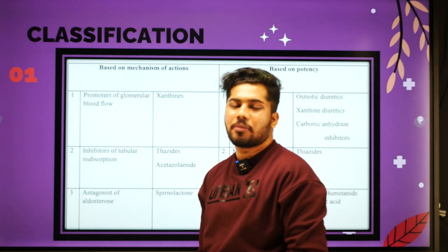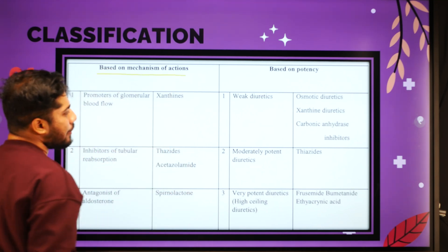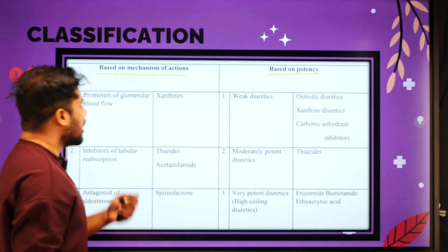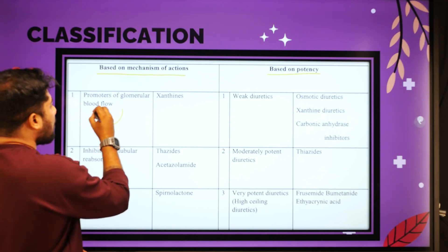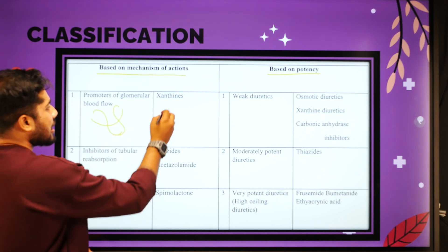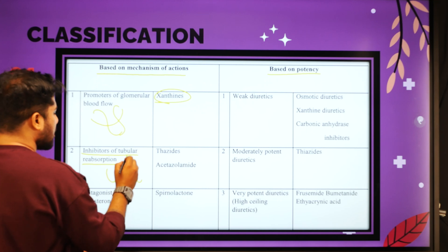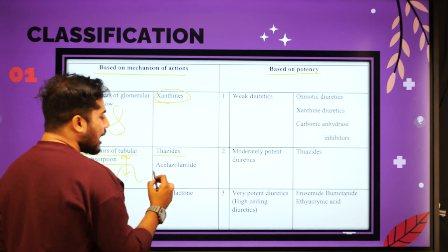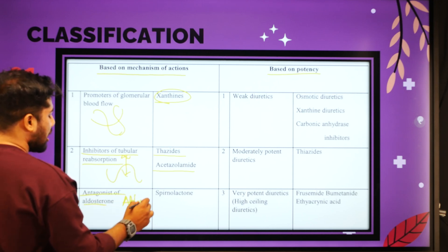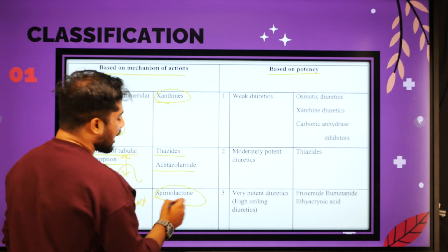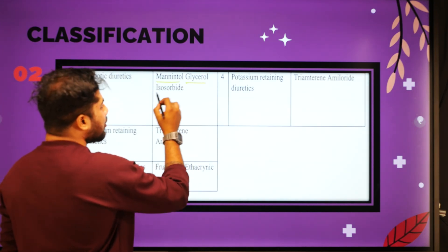The major classification of diuretics: the first one is based on mechanism of action. First, promoters of glomerular blood flow — example: xanthines. Next, inhibitors of tubular reabsorption — thiazides are associated. And antagonists of aldosterone — example: spironolactone. And osmotic diuretics — examples: mannitol, glycerol, and isosorbide.